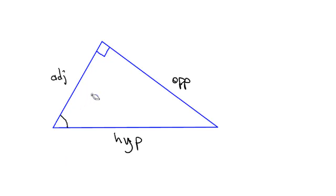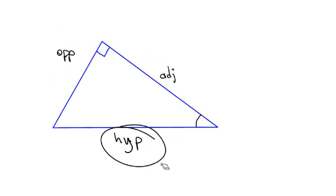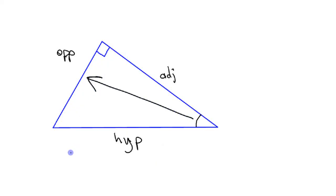As we said before, if you switch which angle you're looking from — instead of this angle, now looking from this other angle — the opposite and adjacent switch. The hypotenuse stays in the same place, but those other two labels swap, because that becomes the opposite side. That's labeling sides in triangles — the first thing you need to know.